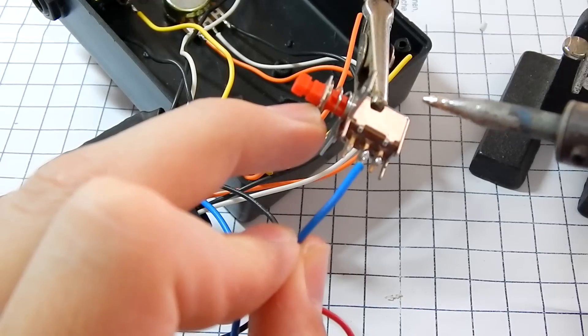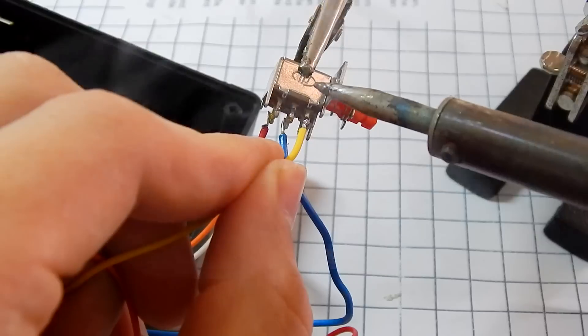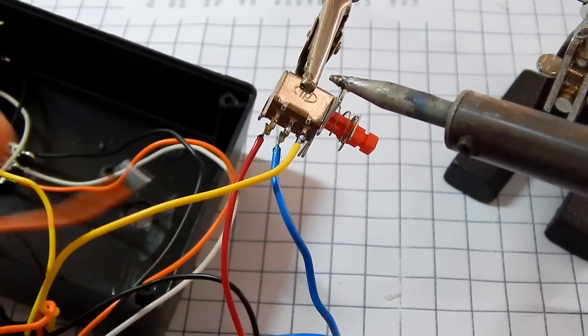The switch wires should be soldered this way: blue to the center pin and red to the bottom. Turning the switch, yellow to the top and orange to the center.